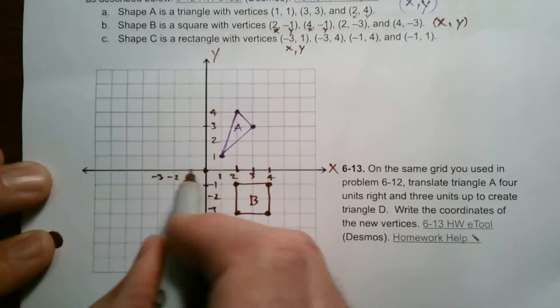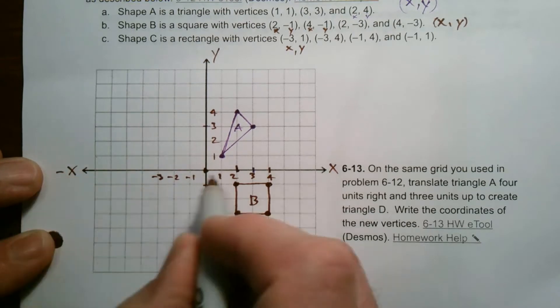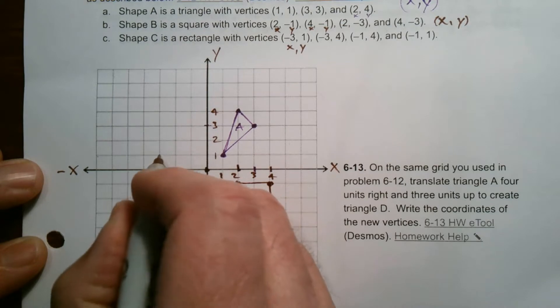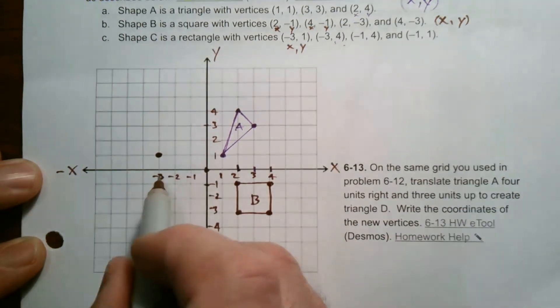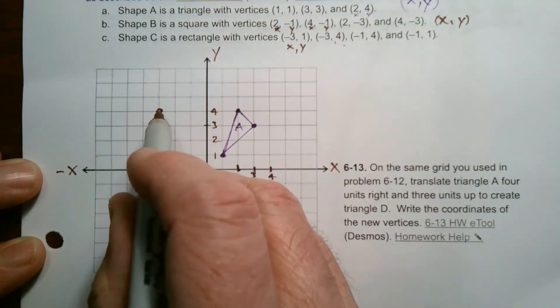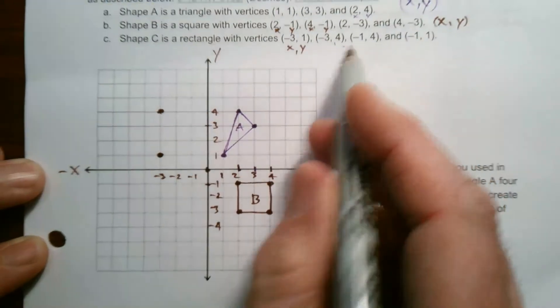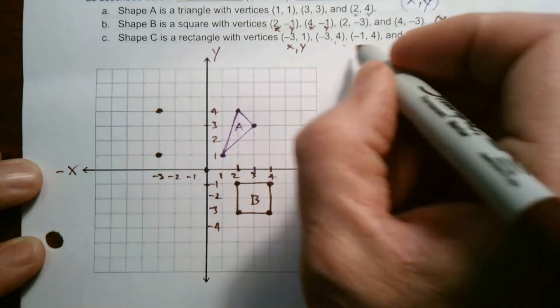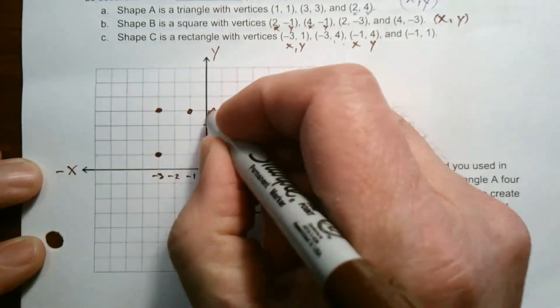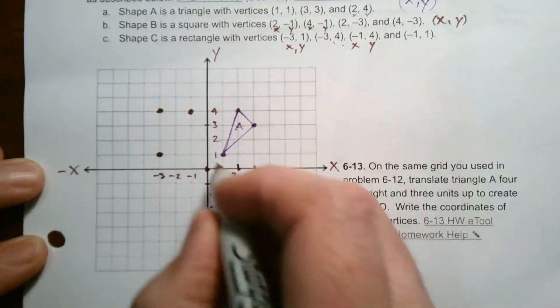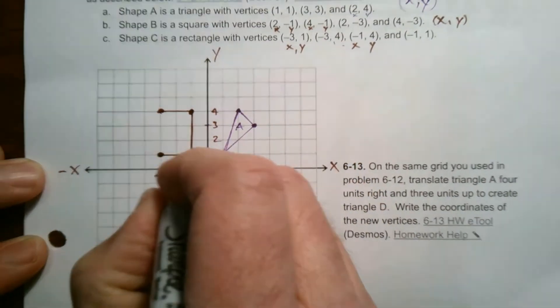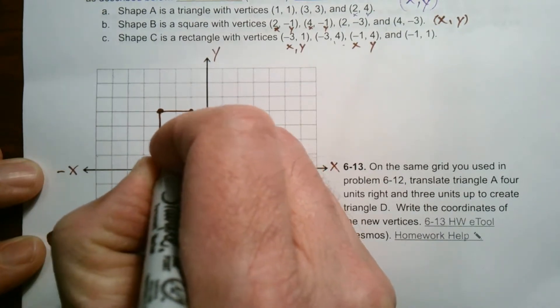So the x is negative three. So here's on the x-axis, right? So these are the negative x's this direction. So negative three, one, and the y is one. That point happens to be right there. Negative three, positive four, right? So negative three on the x, positive four on the y meets right there. Negative one on the x. So that's negative one on the x, four on the y would be right here, right? Negative one on the x, four on the y. And the last one, negative one, one, right there. So that's the rectangle that they want me to draw. And that would be considered shape C.